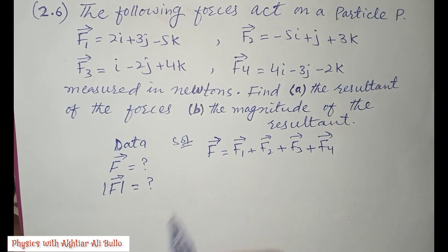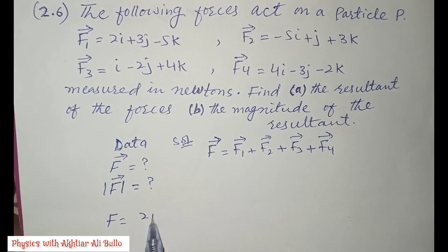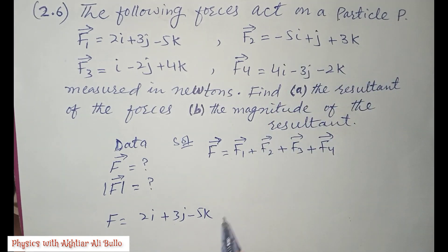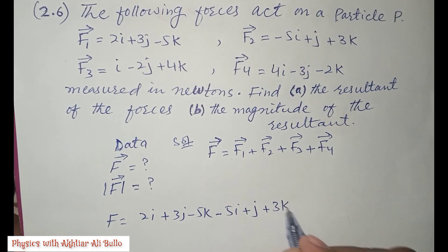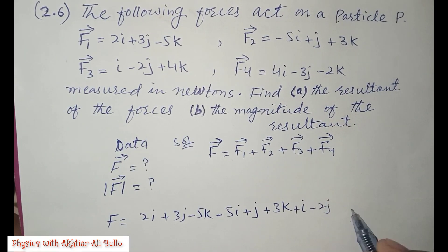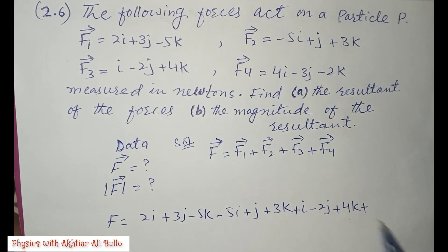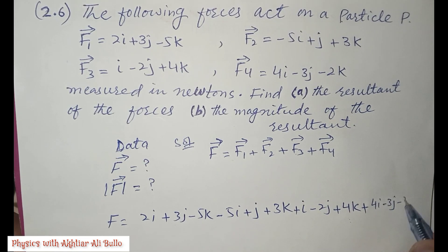Now putting the values: F is equal to — the value of F1 is 2i + 3j − 5k, the value of F2 is −5i + j + 3k, the value of F3 is i − 2j + 4k, and the value of F4 is 4i − 3j − 2k.